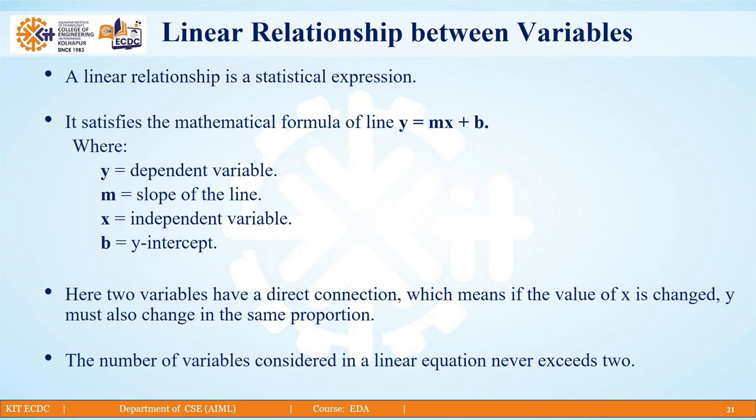Let us first understand the meaning of the word relationship. A relationship is nothing but a connection between two or more entities. Here we are talking about the relationship between variables, and we are precisely looking at a linear connection — a linear association between two variables. A linear relationship is essentially a statistical concept.